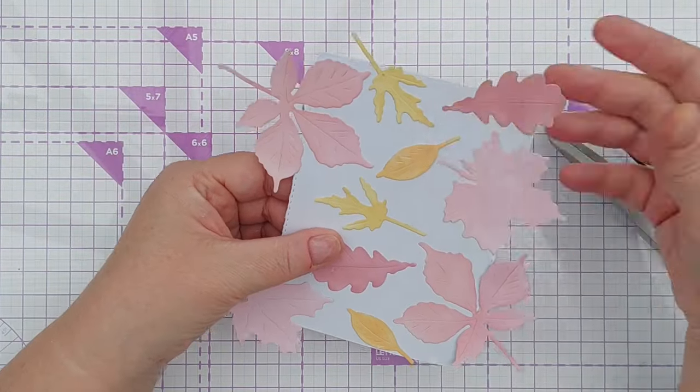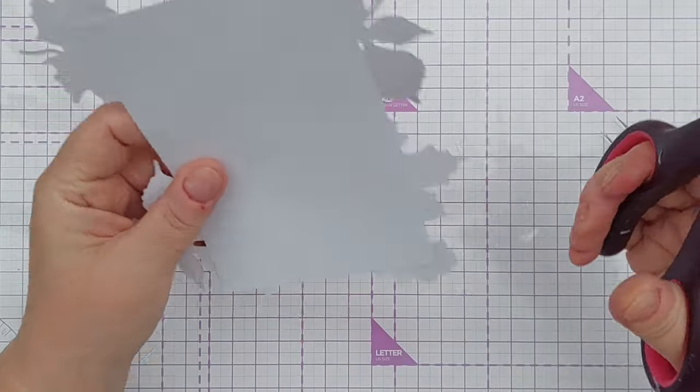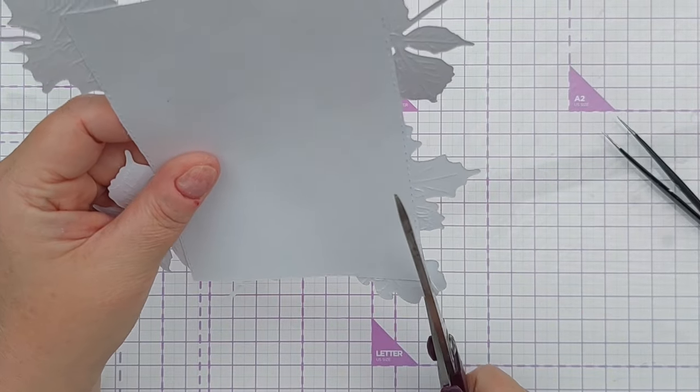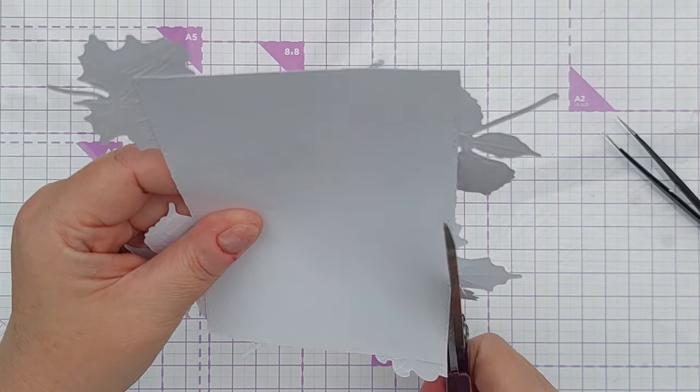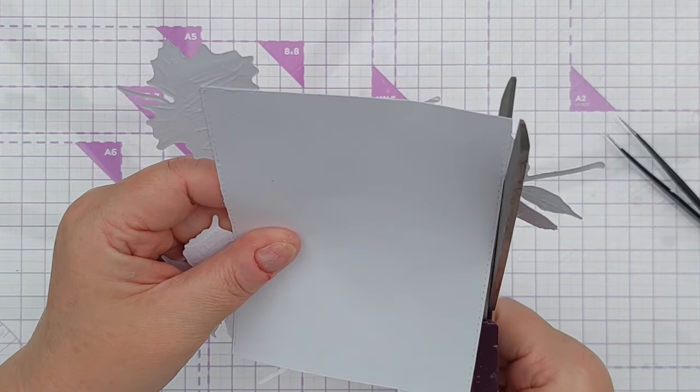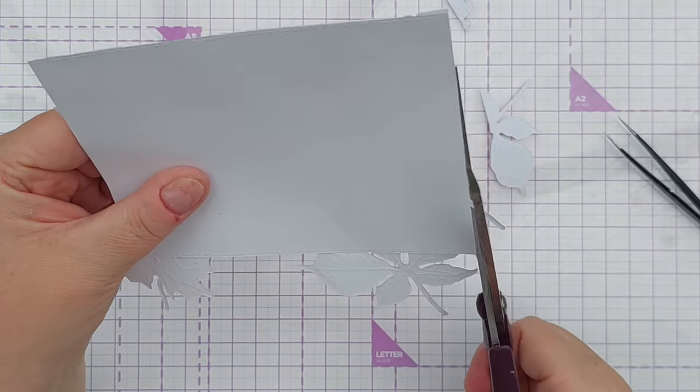So everything's stuck down in a preliminary fashion. I'm going to flip it over and then use my long scissors to trim off the overhang, and I'll keep the bits I snip off and see if I can add some more around the edges just to fill in any gaps.